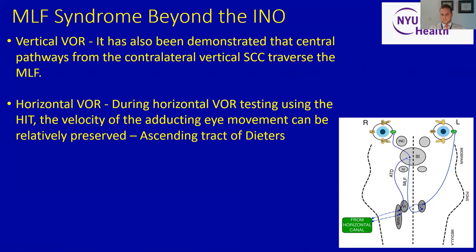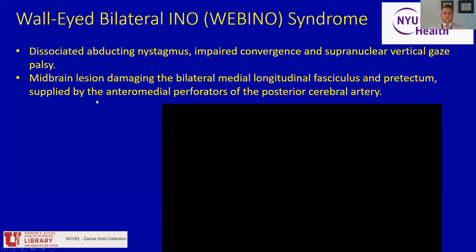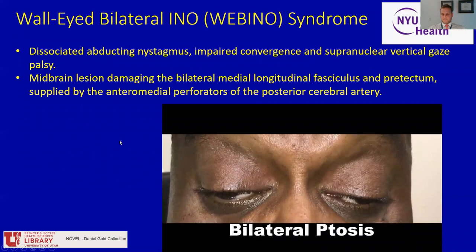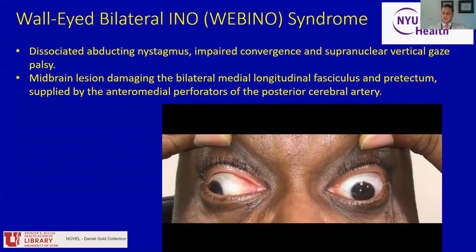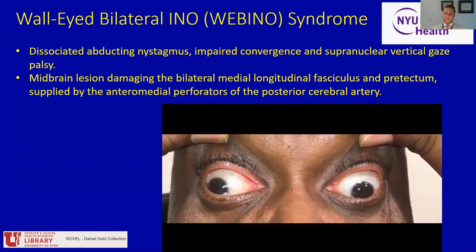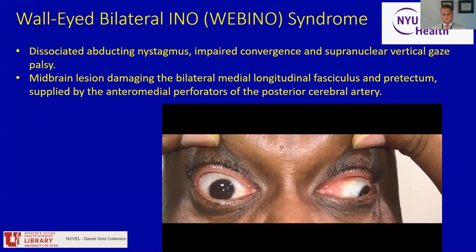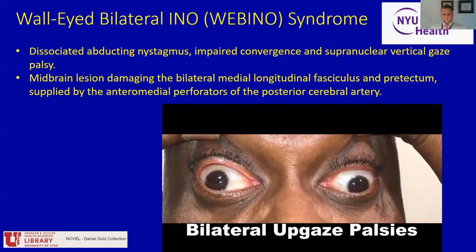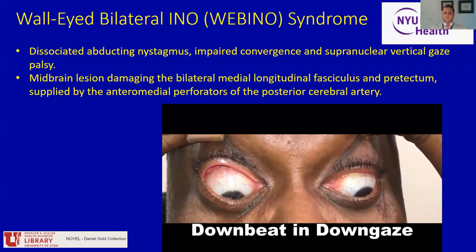Touching briefly on bilateral MLF injury: you can result in something called the wall-eyed bilateral INO, in which individuals can have dissociated abducting nystagmus, impaired convergence, and supranuclear vertical gaze palsy. We'll look at one patient who had a paramedian midbrain lesion in addition to bilateral MLF injury. Here we see the eyes are exodeviated or out — bilateral INOs. He has preserved abduction in left gaze and in right gaze. There's diminished range in upgaze, and downbeat nystagmus in downgaze.